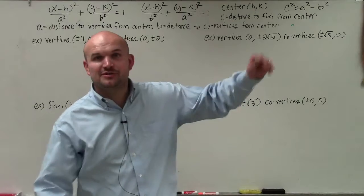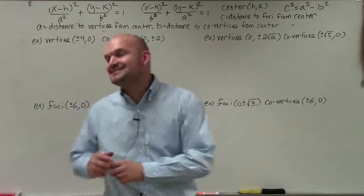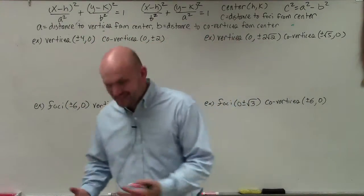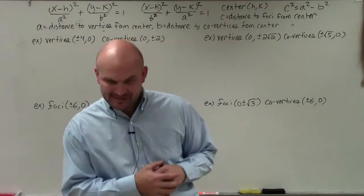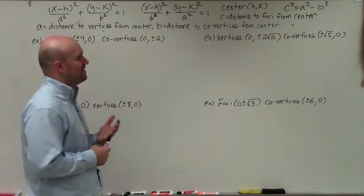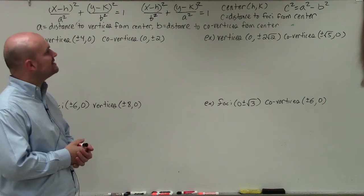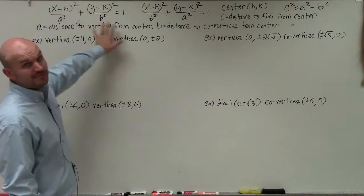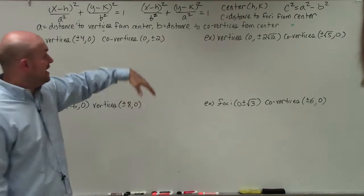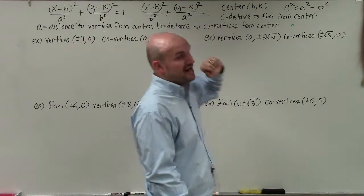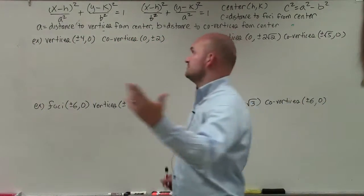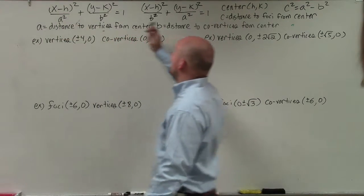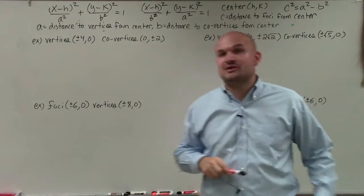Welcome ladies and gentlemen. What I'd like to do is show you how to write the equation of an ellipse given some pieces of information. The main important thing is understanding our two equations: one for when the major axis is horizontal, and another for when the major axis is vertical. The only difference is that a squared is under the x when horizontal, and under the y when vertical.